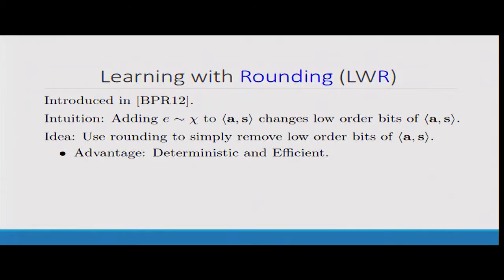The idea that they had was, instead of fuzzing these low order bits, why don't we just round them off, cut them off? That should be at least as hard as the original learning with error problem, and this has advantages. It's deterministic and efficient.